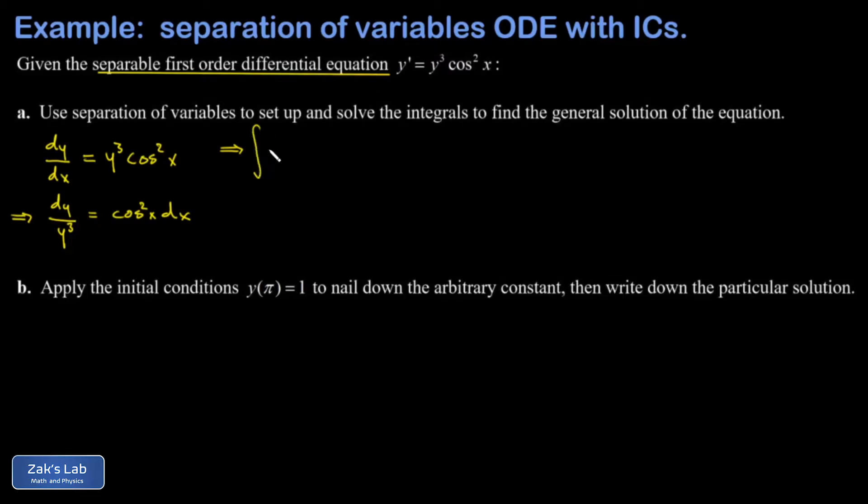I'm going to re-express 1/y³ as y⁻³ because it makes it easier to see the power rule. So I have ∫y⁻³ dy = ∫cos²x dx. Now each of these integrals produces an arbitrary constant and those two arbitrary constants can be combined into one, and I'm going to leave that on the right hand side.